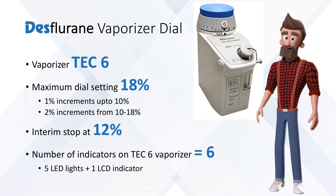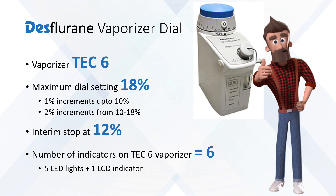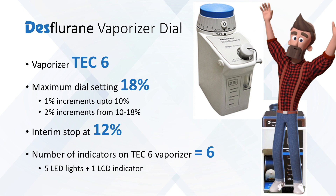The number of indicators on the Tec 6 vaporizer — you can see five LED indicators plus one LCD level indicator. Five plus one again makes six. There you see a total of six indicators.